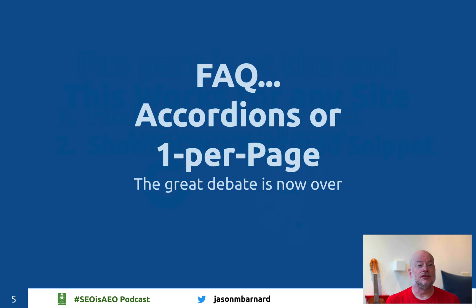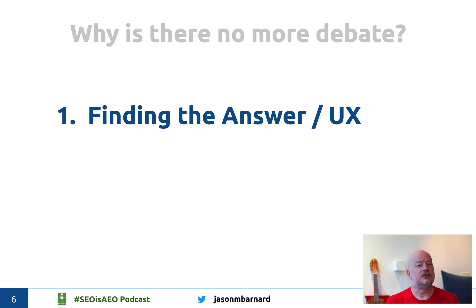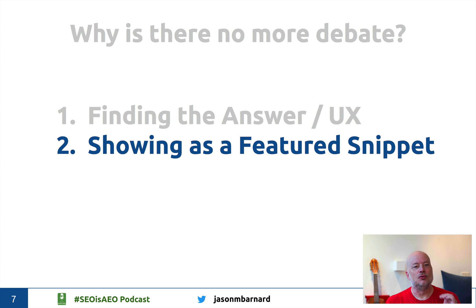The FAQ debate — accordions or one per page — is now over. Why? Firstly, because a user coming from Google and searching through those accordions for the specific question they just asked is not a great user experience. Number two, Google won't give you the featured snippets, or at least if it does, it won't show them very adequately for you.